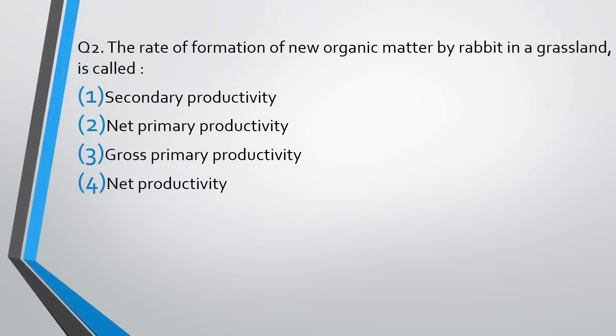Question number 2. The rate of formation of new organic matter by rabbit in a grassland is: secondary productivity, net primary productivity, gross primary productivity, or net productivity. We are talking about rabbit. Correct answer is option 1 — secondary productivity.